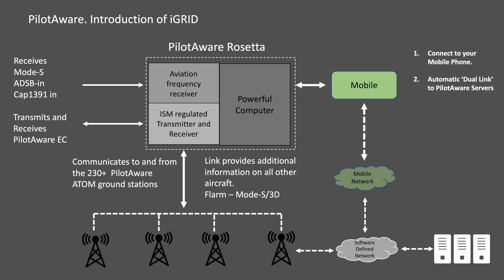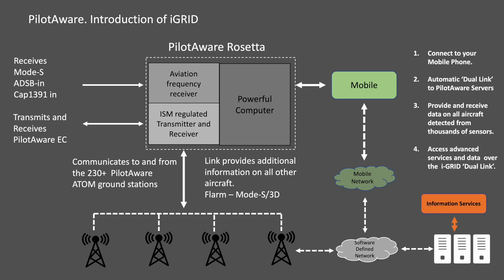To use iGrid, a mobile network connection is made to an existing PilotAware device using the hotspot facility built into all smartphones. This gives a second link access to the PilotAware servers using the mobile network. Information on all local aircraft can then be transferred to individual aircraft as required. All data is time stamped with only the latest data being used. Advanced low data rate services available at the servers can also be uplinked into the cockpit.